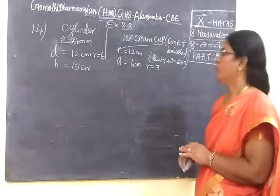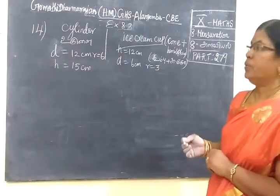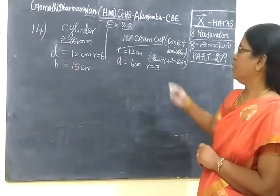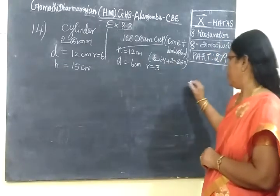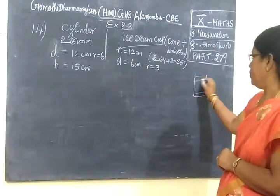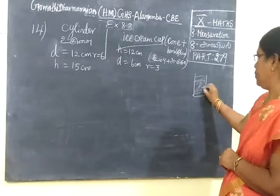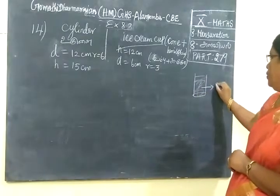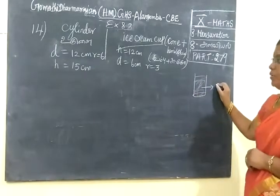Now, we are seeing question 14. It is given a cylinder, that is the ice cream container. We have ice cream in a cylindrical vessel. We transfer this into n number of ice cream cups.